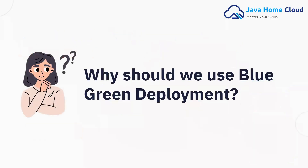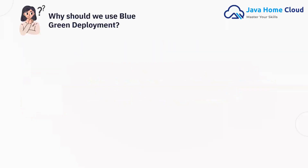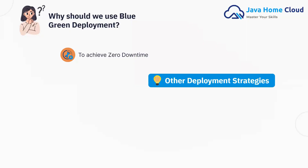Now let's understand why we should use blue-green deployment. It provides zero downtime, and rollback is very easy — if something goes wrong, just switch the traffic back. You can test the new environment fully before exposing it to users. This makes it ideal for production environments where availability and user experience are critical. Along with blue-green deployment, we also have other strategies like canary deployment and rolling updates, but in this video I will focus on blue-green deployment.